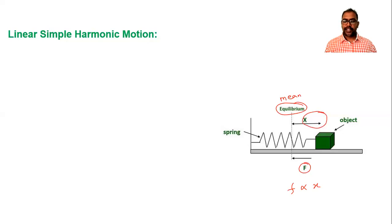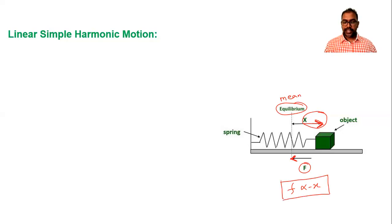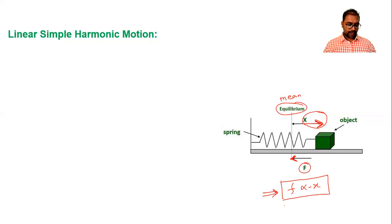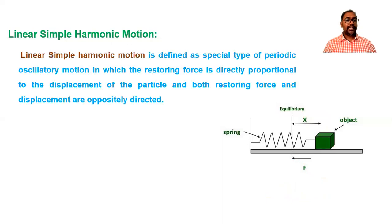The block is displaced toward the right side, but the restoring force acts toward the left — they are oppositely directed, so we apply a negative sign. From this, we define linear SHM: it is an oscillatory motion where the restoring force is proportional to the displacement and both are oppositely directed.